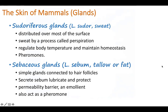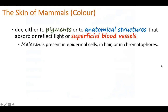Another important feature of mammalian skin is its color. Color is produced either due to pigments present in the skin or due to anatomical structures such as hair or scales, which absorb and reflect light. Superficial blood vessels in the skin can also help in color adaptation of the mammalian skin.